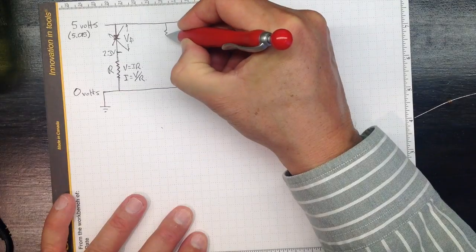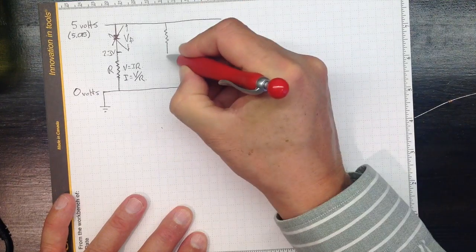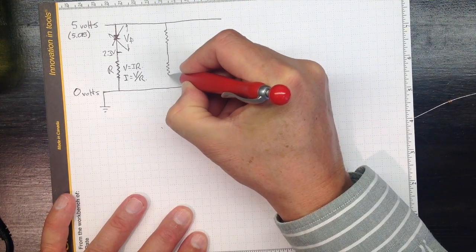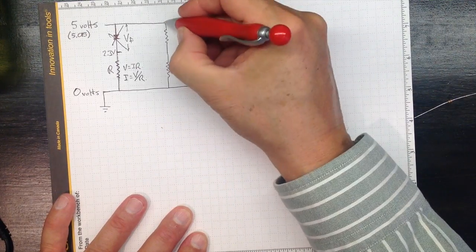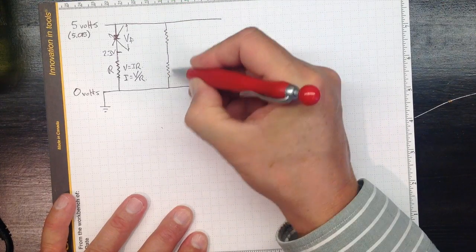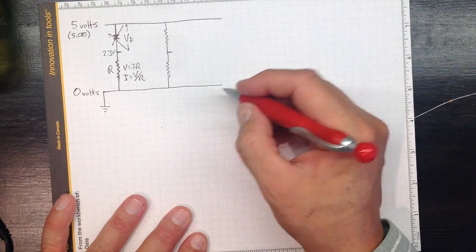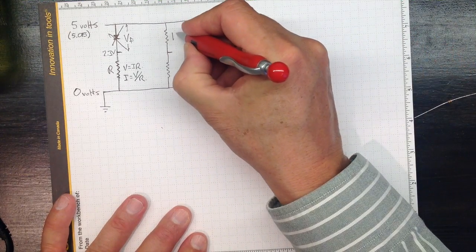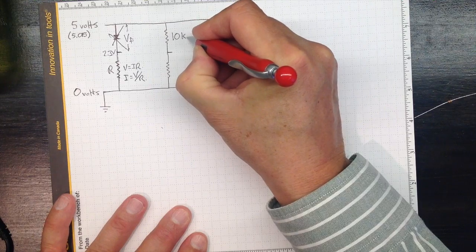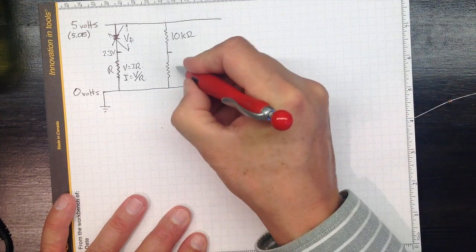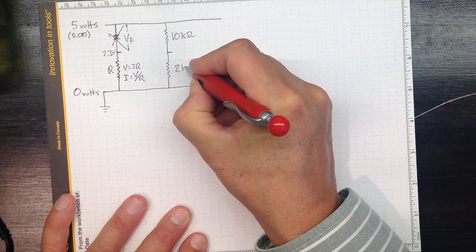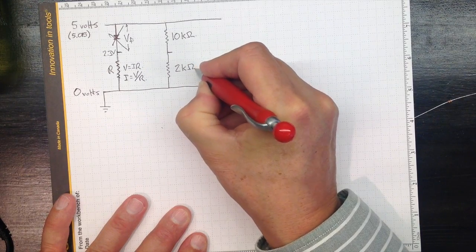If we have a resistance, and another resistance, then this will be 5 volts, that will be 0 volts, and this will be some in-between voltage. Now in the example we did, this was a 10K resistor, 10,000 ohms, and this was a 2,000 ohm resistor.